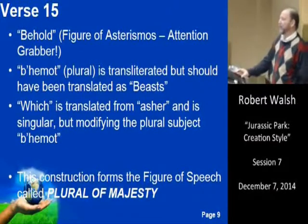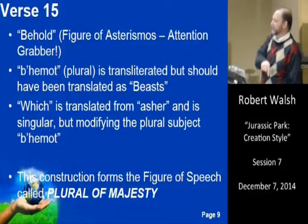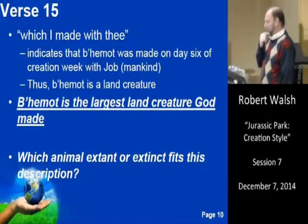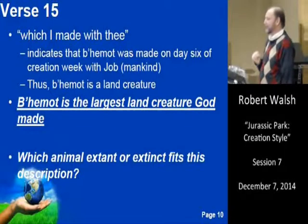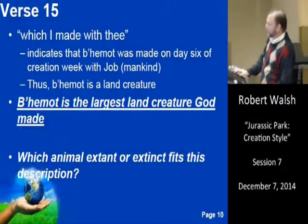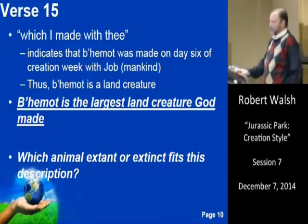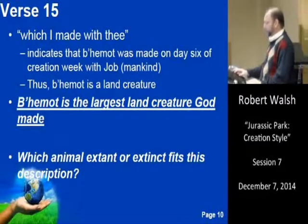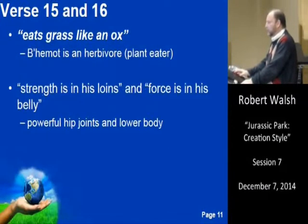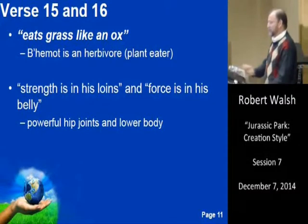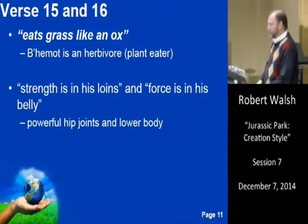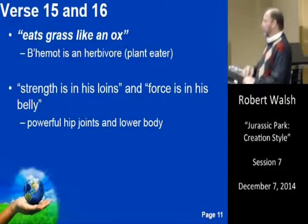The phrase 'which I made with you' — God is telling Job that this creature was made on the same day that man was made. So Behemoth is a land creature. As we will see, he's the largest land creature that God made. We're also told that Behemoth eats grass like an ox — so he's a plant eater, an herbivore. His strength is in his loins and the force is in his belly, meaning he has extremely powerful hip joints and his lower body is massively strong.